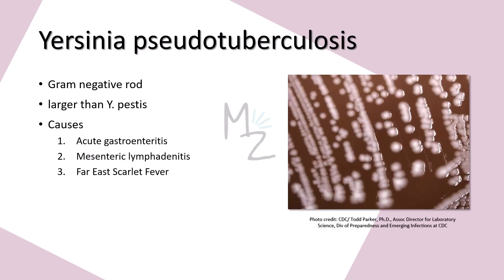Now let's look at Yersinia pseudotuberculosis. It's also a gram-negative rod, larger than Yersinia pestis, and oval shaped. It is responsible for causing acute gastroenteritis, mesenteric lymphadenitis, and far east scarlet fever. This is how it looks on a culture plate — its colonies are white and circular.